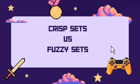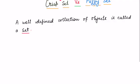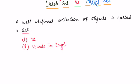In the pursuit of understanding fuzzy sets, let us start with understanding the difference between crisp sets and fuzzy sets. A well-defined collection of objects is called a set — a definition we studied from class 1 through class 12. Examples include the set of integers and the set of all vowels in English. Now we move to the crisp set.